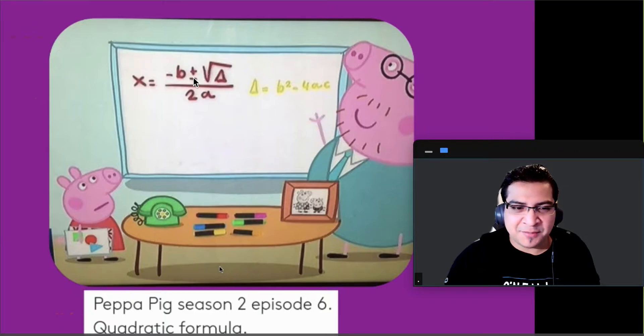So I like how Daddy Pig breaks it down for her. He says x equals negative b plus or minus the square root of triangle all over 2a. But that triangle is delta in Greek letters and that triangle is b squared minus 4ac. In our terms that'll be the discriminant which will allow you to find out the number of solutions.